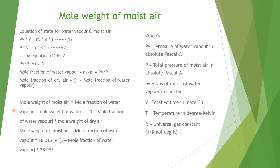The mole weight of moist air equals the mole fraction of water vapor times the mole weight of water vapor, plus the mole fraction of dry air times the mole weight of dry air. That is: mole weight of moist air = (mole fraction of water vapor × 18.015) + (1 minus mole fraction of water vapor) × 28.965. So if you know the mole fraction of water vapor, you can calculate the mole weight of moist air.